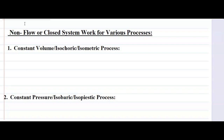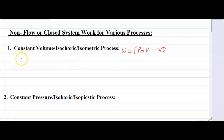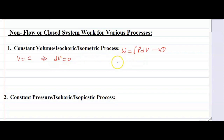The first process we are covering is constant volume, also known as the isochoric or isometric process. We know that for a closed system the formula is W equals integration of P dV. Since volume is constant, dV equals zero, and putting this value into the first equation, we get W equals zero.